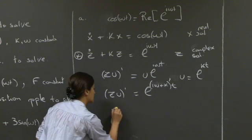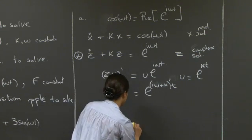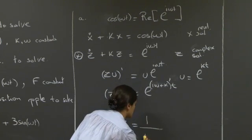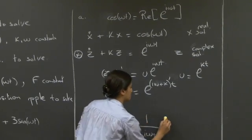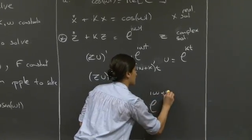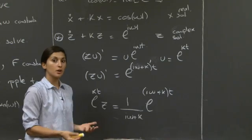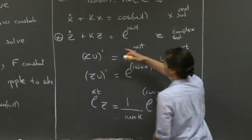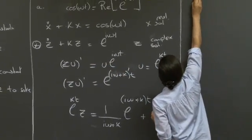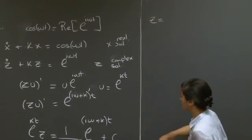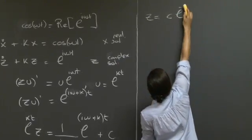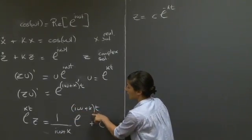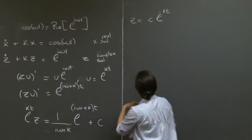On the left-hand side we get e to the kt times z. On the right-hand side, we're integrating — it's still an exponential even though it's complex. We need to introduce, of course, a constant of integration. The solution for equation star is then: dividing through gives e to the minus kt, and the minus kt from this exponential is cancelled out by the integrating factor.